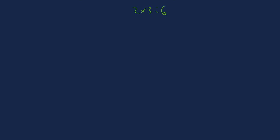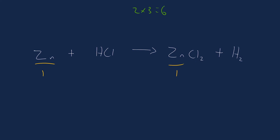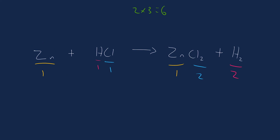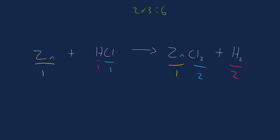Another one: the reaction of zinc with hydrochloric acid. Count things up: one zinc each side — zinc is already balanced. Hydrogen: one on the left, two on the right. Chlorine: one on the left, two on the right. The two things that are not balanced — chlorine and hydrogen — are together on the same side, so we only need one step. Put a two in front of HCl, giving two hydrogen and two chlorine. That's now balanced.